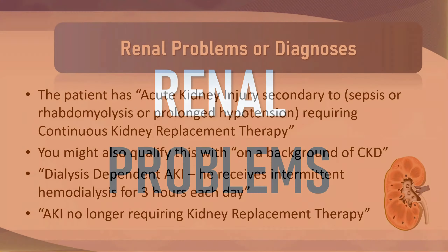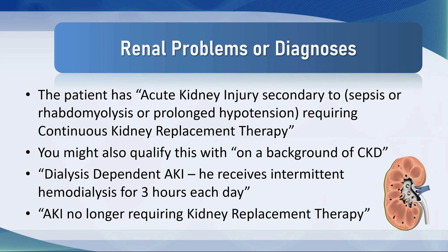Renal problems. With renal problems, you may or may not have a specific diagnosis or a cause and effect. But what you would usually say is: the patient has acute kidney injury secondary to sepsis, rhabdomyolysis, or prolonged hypotension, requiring continuous kidney replacement therapy. You might also qualify this with 'on a background of chronic kidney disease' — and that's important because that patient may not recover renal function. Or: the patient has dialysis-dependent acute kidney injury and receives intermittent hemodialysis for three hours each day. If the patient has recovered, you might say 'acute kidney injury no longer requiring kidney replacement therapy,' framing that the patient had it at one stage but is no longer receiving that therapy.